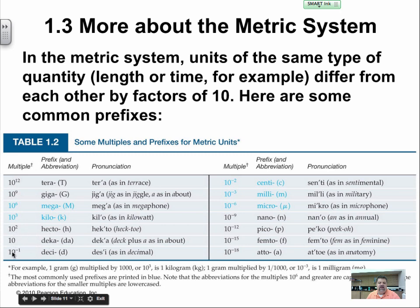Deci is 10 to the negative 1, centi is 10 to the negative 2, milli is 10 to the negative 3, and so on and so forth.